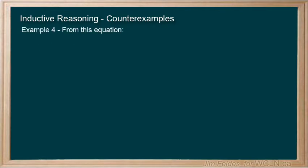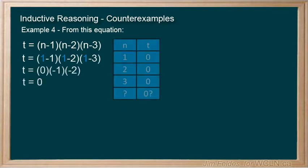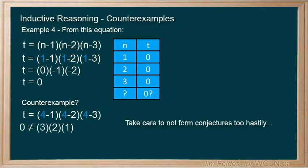Example four. From this equation, we start testing values starting with one. And the product is zero. The first three numbers we test equal zero. So, we form the conjecture that t will always be zero. Can you find a counter-example? Of course, one, two, and three are the only numbers that have a product of zero. So, any other number is a counter-example. We need to be careful not to form our conjectures too hastily.